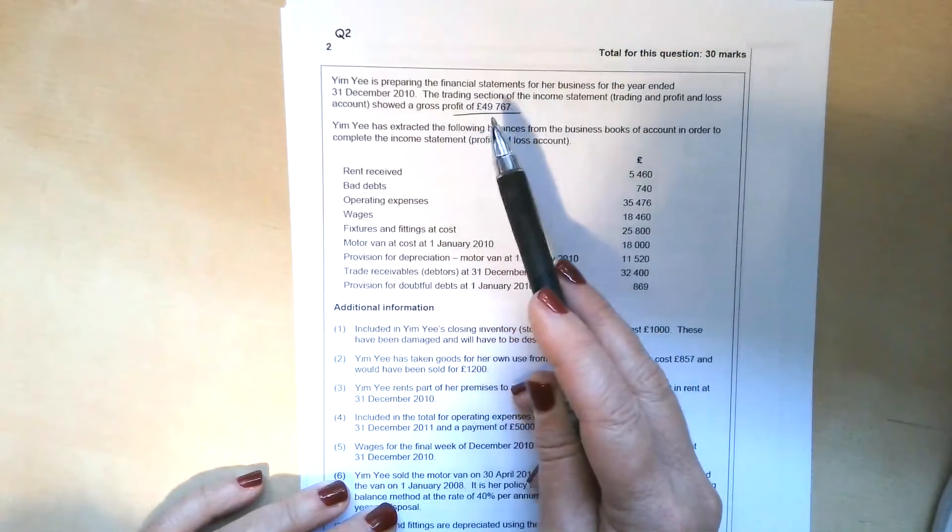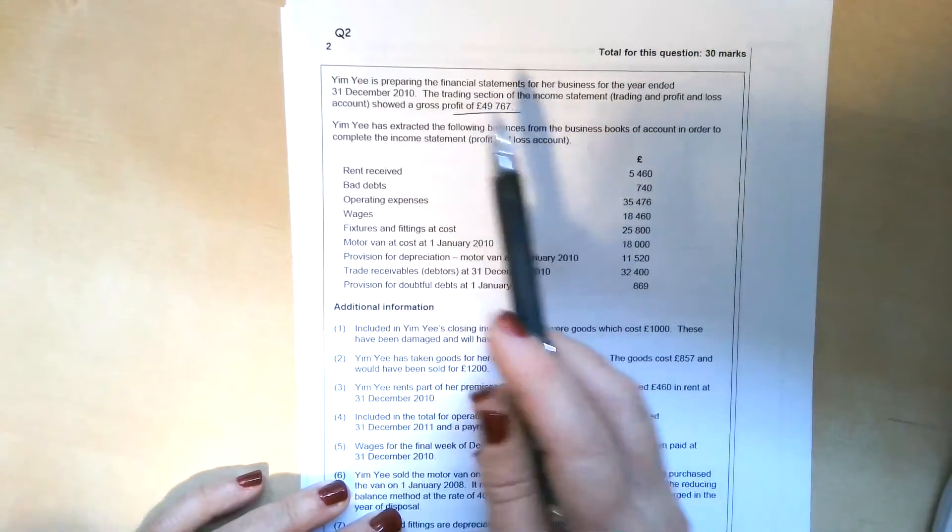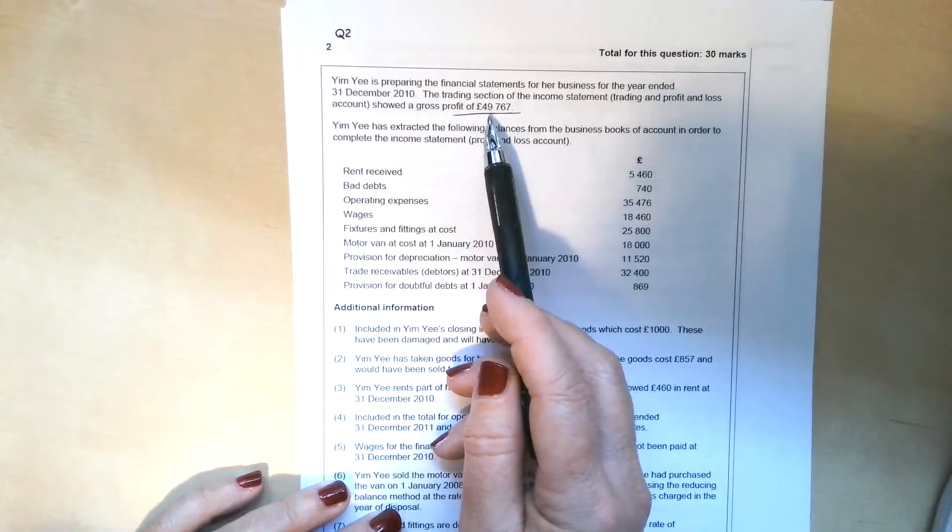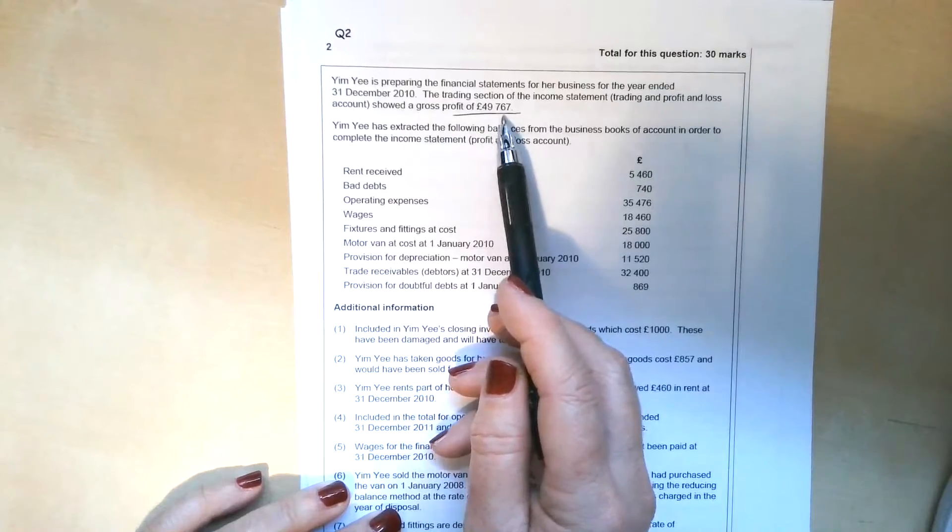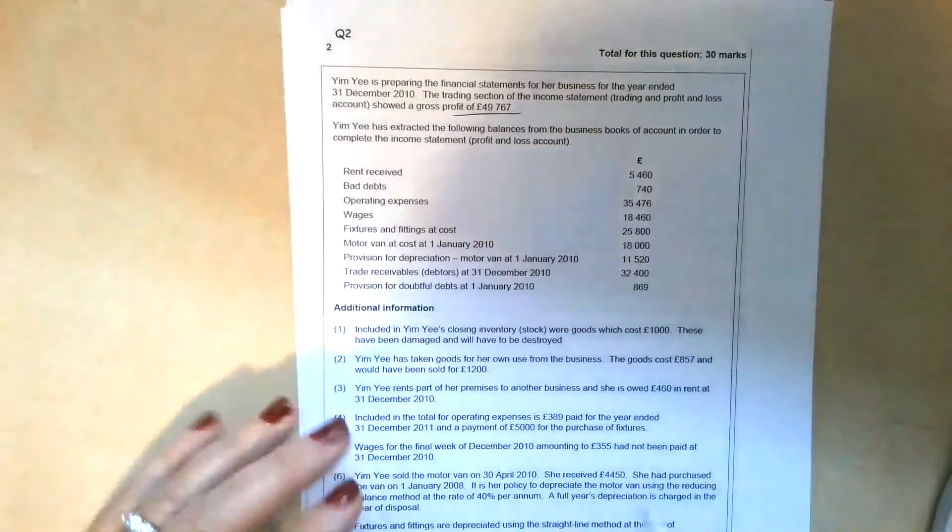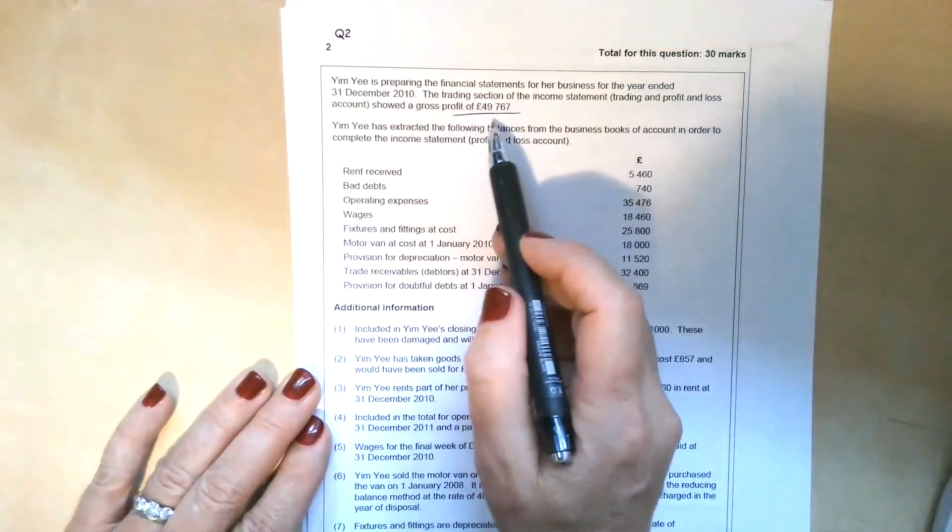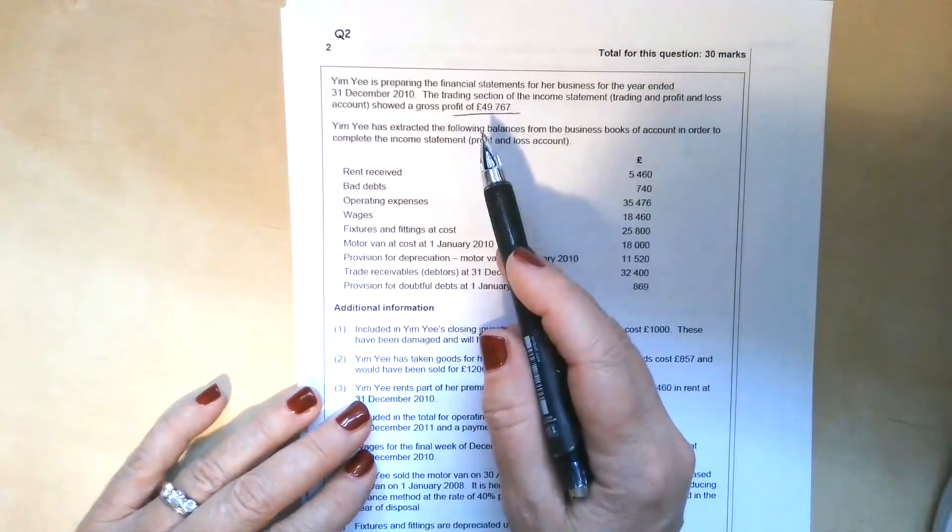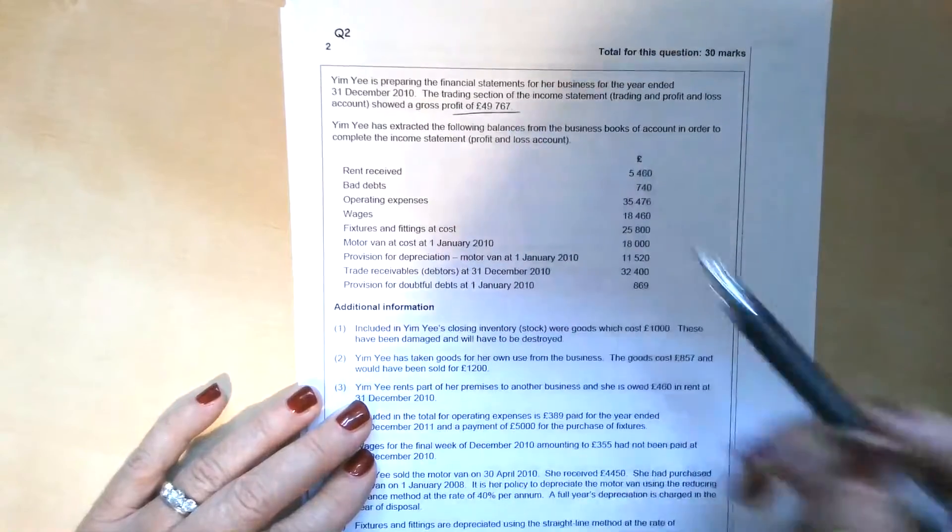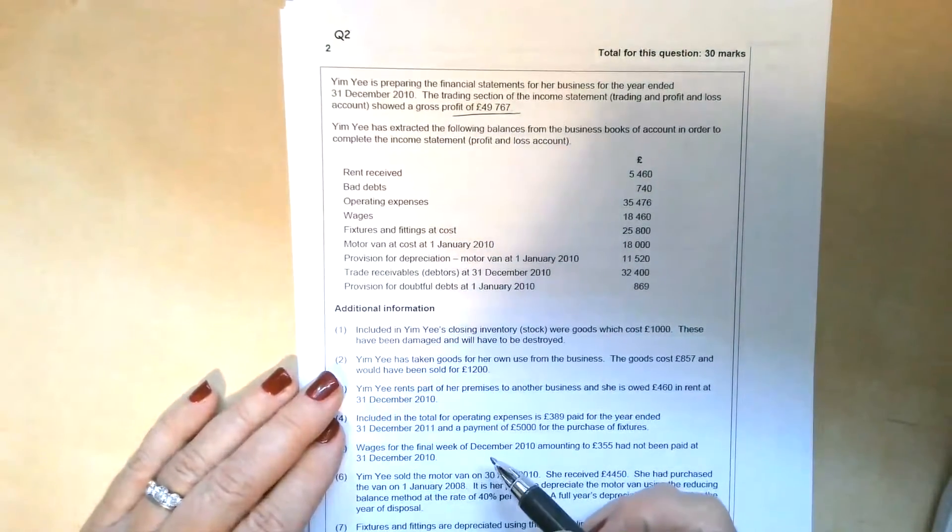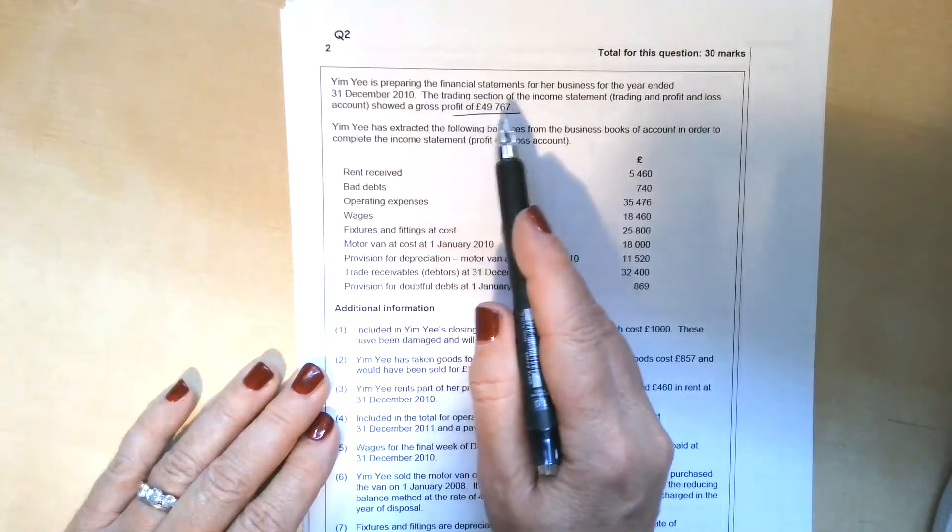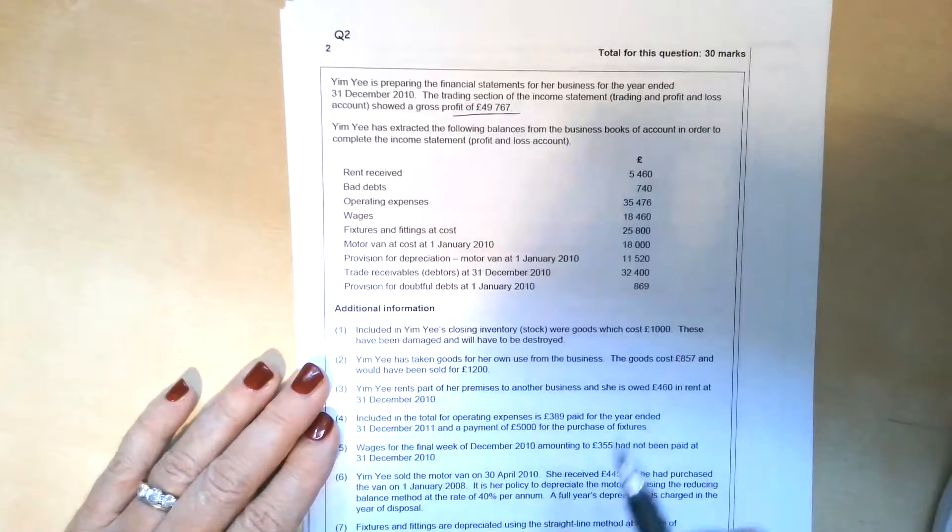Yim Yi is preparing financial statements for her business, and she's already worked out a gross profit for the year ended 31st of December 2010 of £49,767. That means we don't have to start with sales. If you get a question like this, don't waste time looking for sales and everything that goes into cost of sales, that's already been done. But you do need to bear in mind that if any of these pieces of additional information relate to anything within the trading section of the income statement, you are going to need to adjust that gross profit figure.